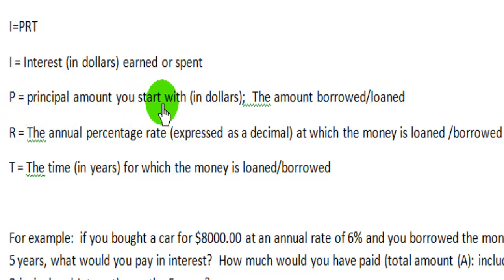P is the principal amount that you start with in dollars. In this case, it's the amount that you borrowed. R is the annual percentage rate expressed as a decimal at which the money is borrowed. And T is the time in years for which the money is borrowed.